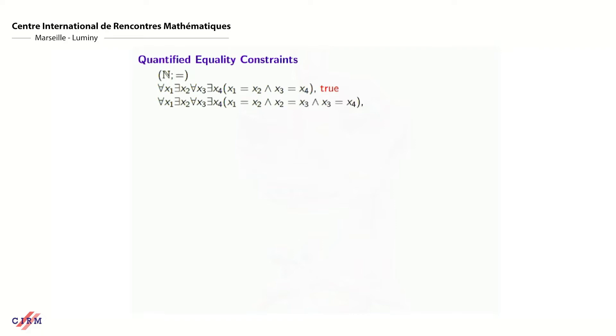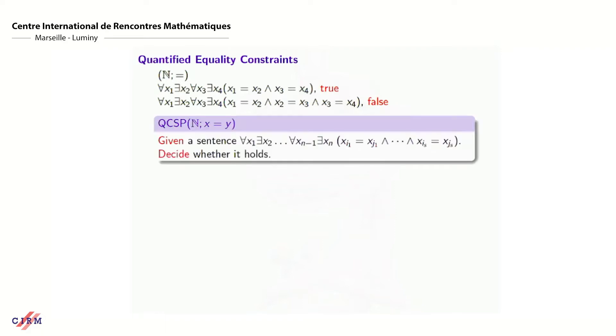Assume that we have an infinite set — for example, the set of natural numbers — and we have equality on the set. We can use both quantifiers and then a conjunction of two equalities, and we may check that this sentence holds for natural numbers. Or we may add one more equality and then we see that this sentence doesn't hold, so this is false.